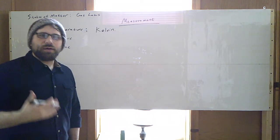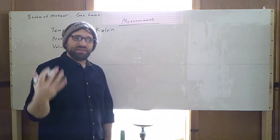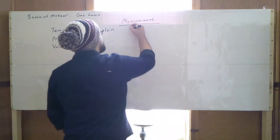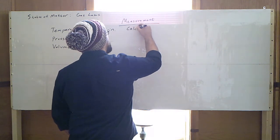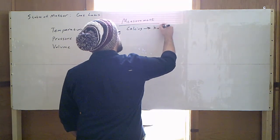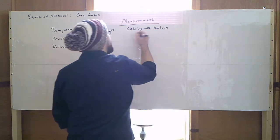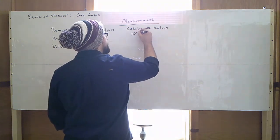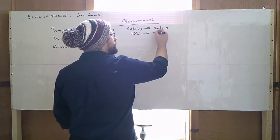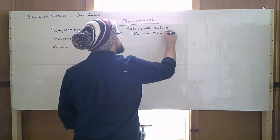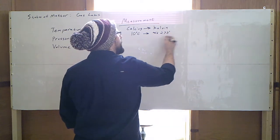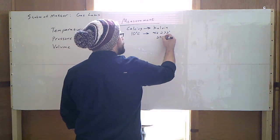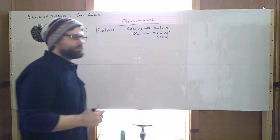Often you'll get a problem that gives you the temperature in degrees Celsius and you'll need to convert it to Kelvin. So if you get Celsius, convert it to Kelvin by taking whatever temperature it is, let's say it's 10 degrees Celsius, and add 273 degrees to it. And then you'll get degrees Kelvin. So 10 degrees Celsius would be 293 Kelvin.